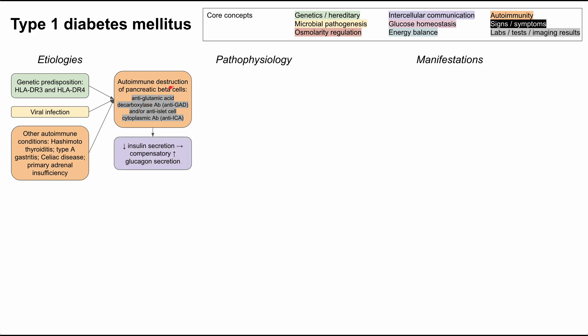When you have autoimmune destruction of the pancreatic beta cells, the result on the biochemistry of the body is that you're going to have decreased insulin secretion, and your body will have a compensatory increased glucagon secretion. So high glucagon, low insulin, because the pancreatic beta cells are being destroyed.